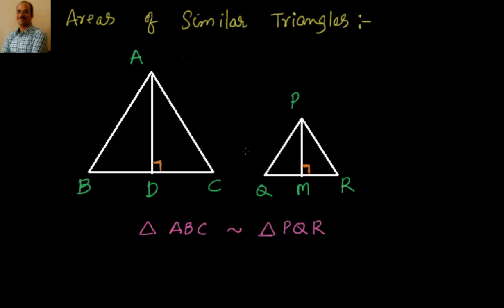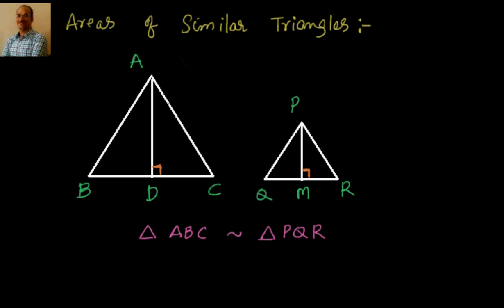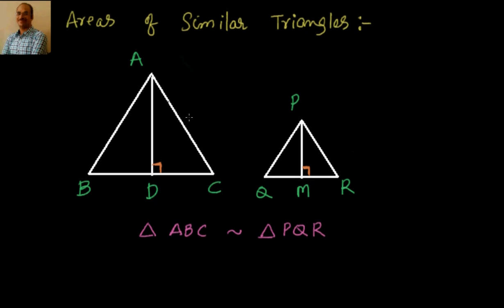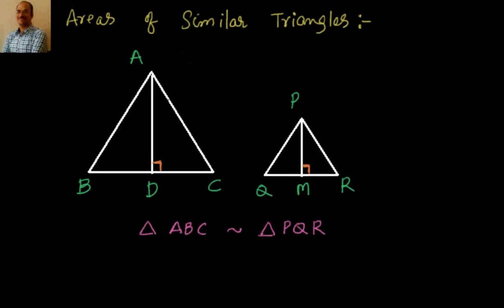Hi, welcome back. In this video we will see how we can find out the area of similar triangles if we know that the sides are in proportion. When we say similar triangles, we know that the corresponding angles are equal and also we know that the corresponding sides are in proportion. Now, to find out how the areas of similar triangles are related if we know the sides are in proportion, let's try to find out the area of each triangle.